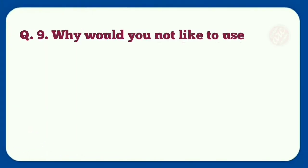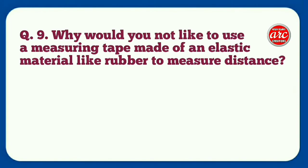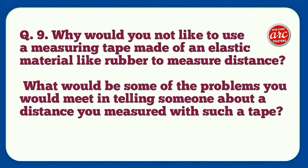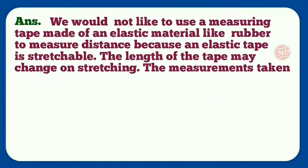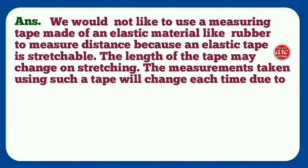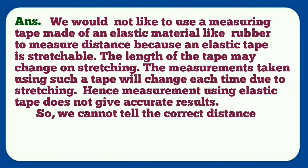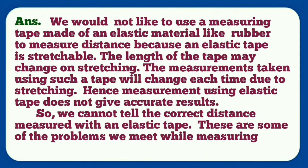Question number nine: Why would you not like to use a measuring tape made of an elastic material like rubber to measure distance? What would be some of the problems you would meet in telling someone about a distance you measured with such a tape? Answer: We would not like to use a measuring tape made of an elastic material like rubber to measure distance because an elastic tape is stretchable. The length of the tape may change on stretching. The measurement taken using such a tape will change each time due to stretching. Hence measurement using elastic tape does not give accurate results, so we cannot tell the correct distance measured with an elastic tape. These are some of the problems we meet while measuring distance with such a tape.